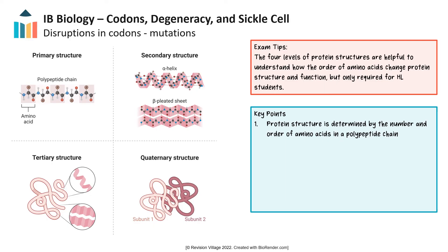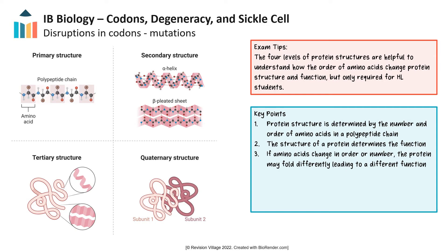Now that we understand how the triplet code codes for amino acids, let's take a closer look at what may happen when there's a change in the DNA code, or a mutation in the DNA. Protein structure is determined by the number and order of the amino acids present in a polypeptide chain. The order and number of amino acids determine how the protein folds, which will become the protein structure. The structure of a protein will then determine its function. If the order or number of amino acids change, the protein will likely fold in a different way, which may then affect its function. It's quite possible to have a change in the order of bases of DNA and not have a change in the protein structure or function. This is called a silent mutation. Silent mutations may also occur when they are situated within a DNA region that is currently inactive within that specific cell.